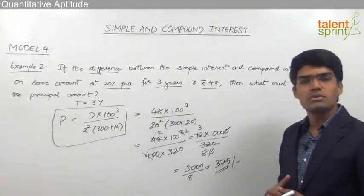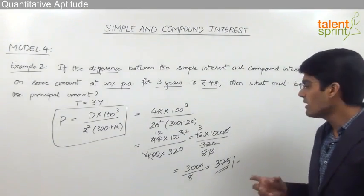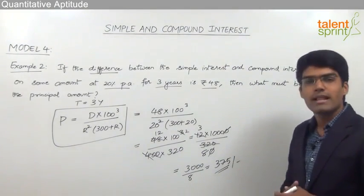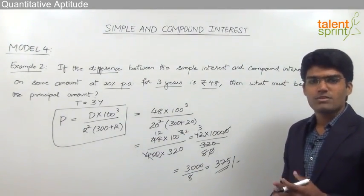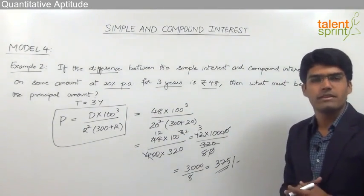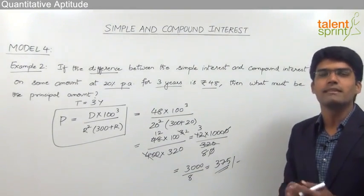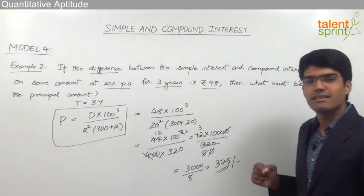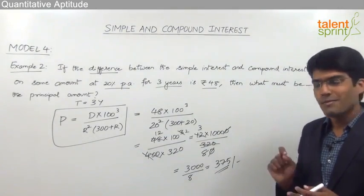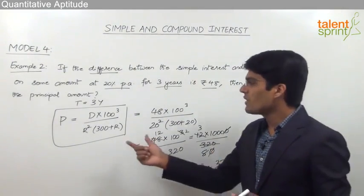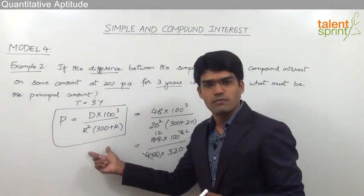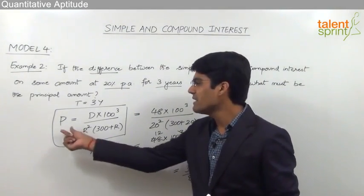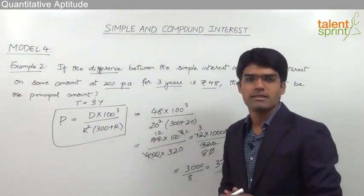This is how we can use the shortcut formula to get the required answer. Solving this question with percentages would become tedious because we need to consider the difference for 3 years, so the best way is to use the shortcut formula: P equals D into 100 cubed divided by R squared into 300 plus R.